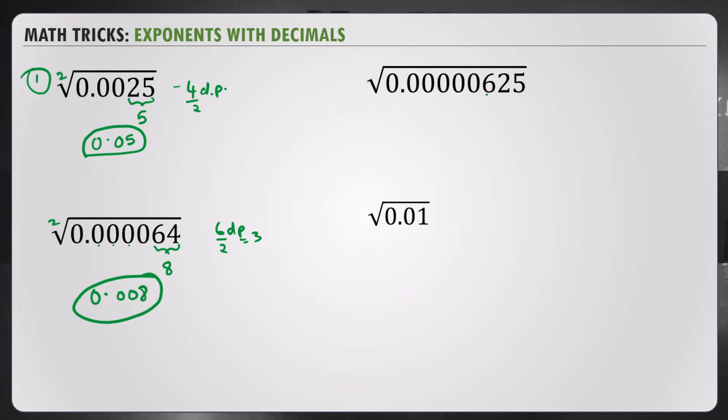Let's do the next one. Square root of 0.00000625. Square root of 625 is 25. Let's count the number of decimal places, which is 1, 2, 3, 4, 5, 6, 7, 8. 8 decimal places. So, your answer should have 8 over 2, which is 4 decimal places, which will be 0.0025.